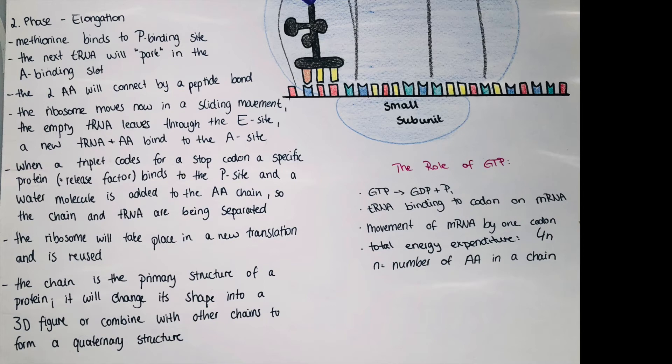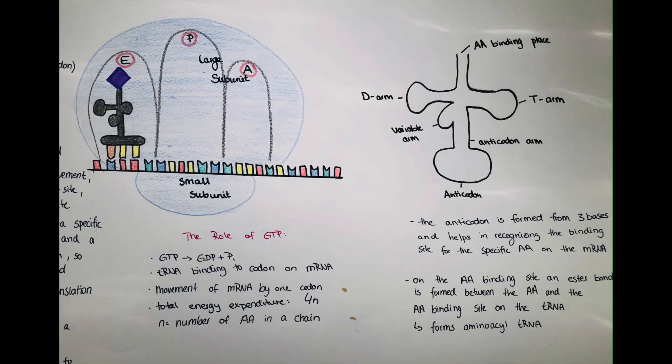So the chain and the tRNA are being separated and then the amino acid will be the primary structure of the protein and this newly created protein will change its configuration and will become the 3D figure or combine with other amino acid chains to form a quaternary structure. The ribosome and mRNA will separate from each other and the ribosome will be reused in a new translation process.